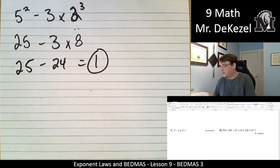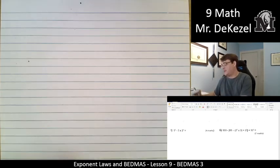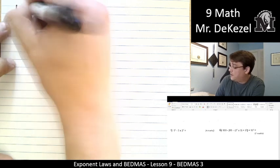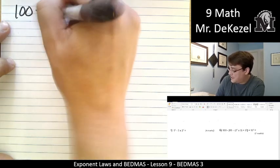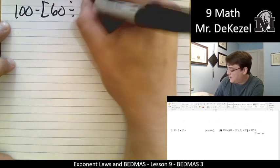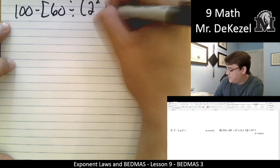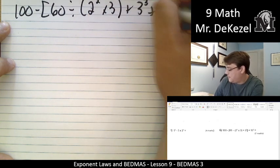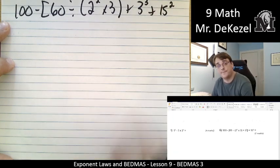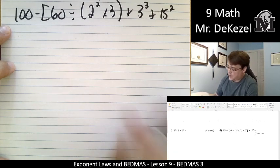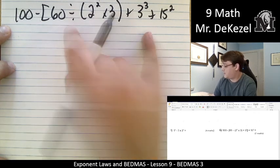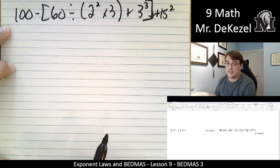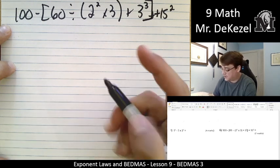And we have one more that is a little bit long. Let's see what we can do. So 100 minus big bracket 60 divided by 2 to the power of 2 times 3, plus 3 to the power of 3, plus 15 squared. We can do this one. So we have brackets. We have a closed bracket there. We have brackets, but we're going to do the small brackets first.